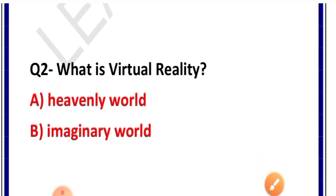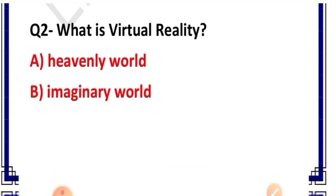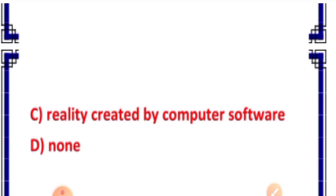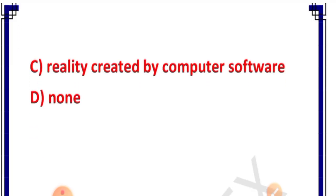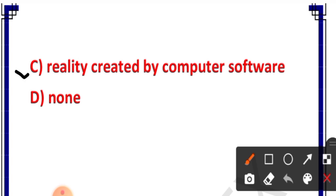Question number 2: What is virtual reality? Options: A. Heavenly world, B. Imaginary world, C. Reality created by computer software, D. None. Correct answer is option C — reality created by computer software. Virtual reality woh hoti hai jo computer software ke dwara create ki jati hai.